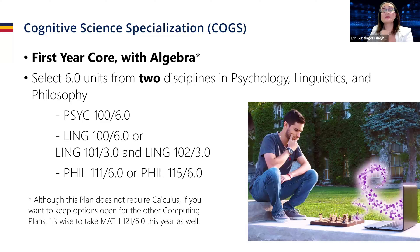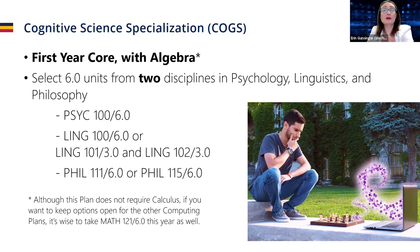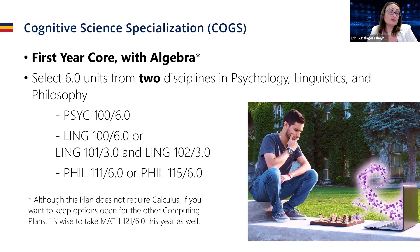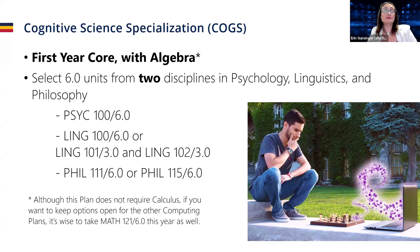For the COGS or cognitive science specialization, it's first year core with algebra. It doesn't require calculus, but as a first year student it's not a bad idea to take the calculus component anyway — just in case you change your mind, you don't want to have to go back and take it later. With COGS, you have to choose two of three disciplines: psychology, linguistics, or philosophy. You'll need to take Psych 100, Ling 100 or 101/102, or Philosophy 111 or 115, depending on your choice.